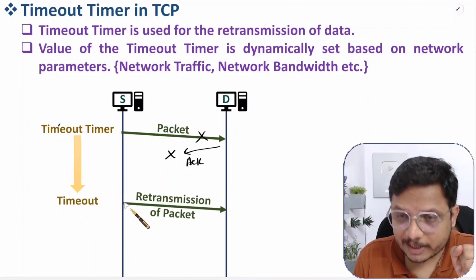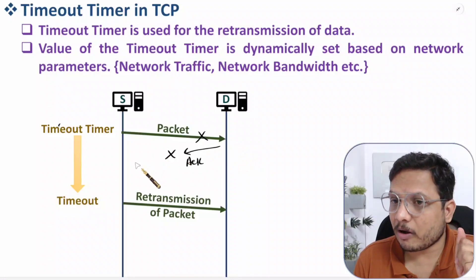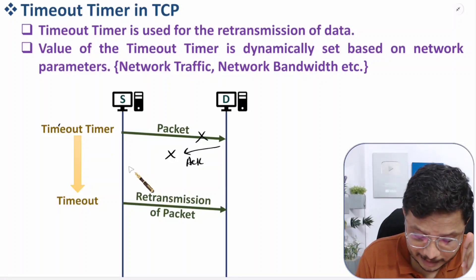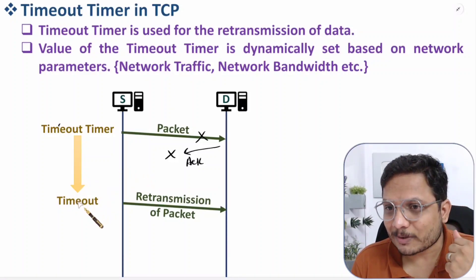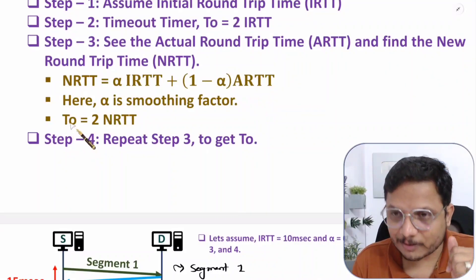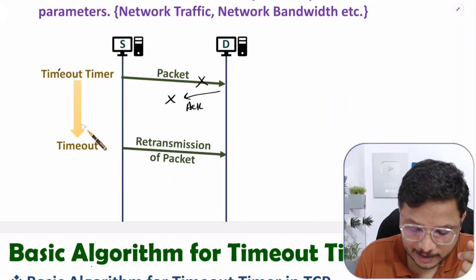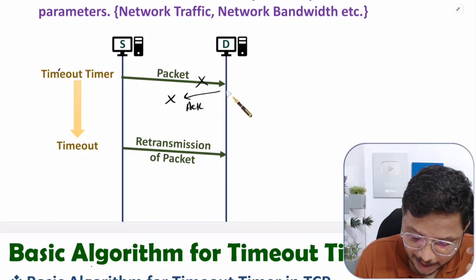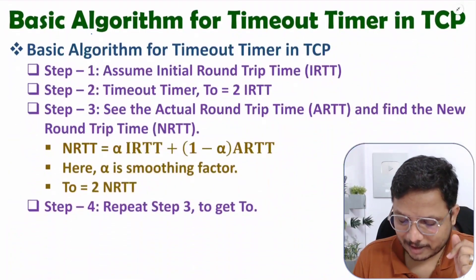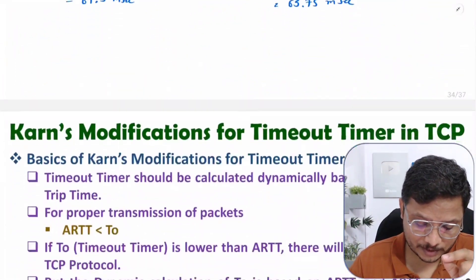After timeout there will be retransmission of a packet. Practically, if you don't receive an acknowledgement, or if your acknowledgement is delayed, and your ARTT is greater than T0 timeout, then how do you calculate T0? T0 calculation is based on ARTT, but if you don't have ARTT, how will you calculate T0? If acknowledgement is not received before T0 you will do retransmission, but for the next packet, what should the value of T0 be?